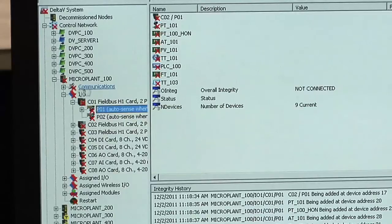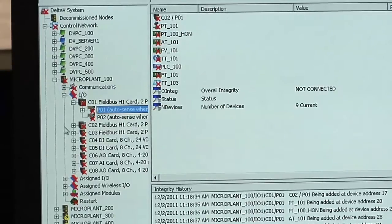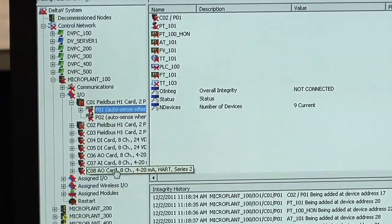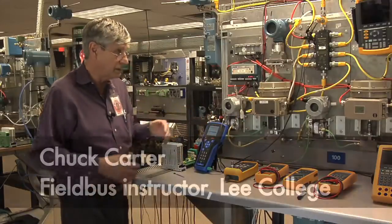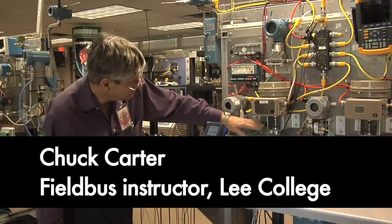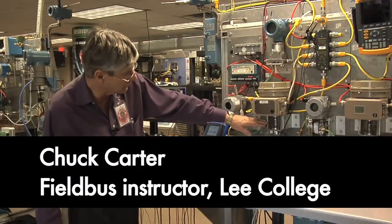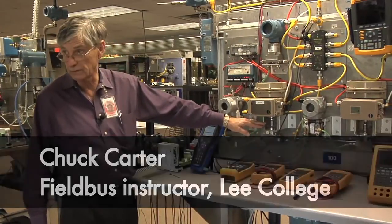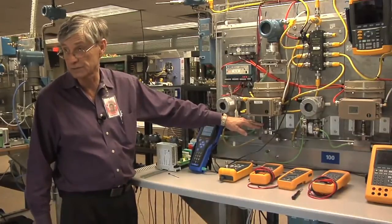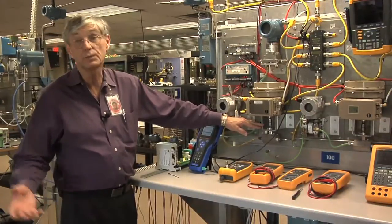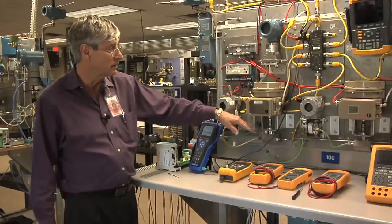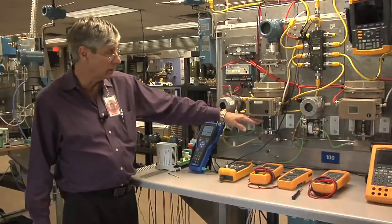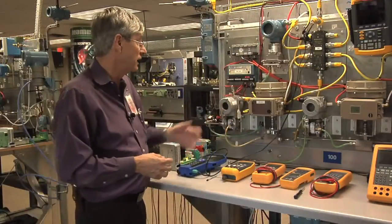However, when we return and look at the valve, we'll notice that the valve position is holding at about the 40-50% that it was at. So with the host's power removed, the valve is holding that position. We didn't hear or see the valve go to any kind of failure position because we have it set up with the control in the field that on failure it's going to retain its last set point and keep working.